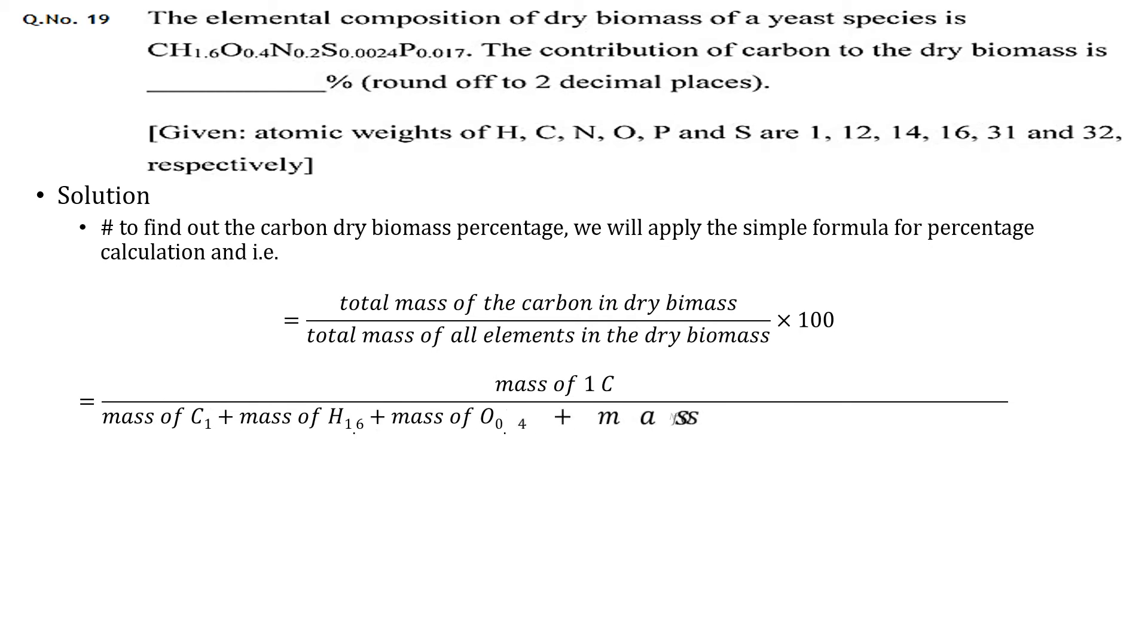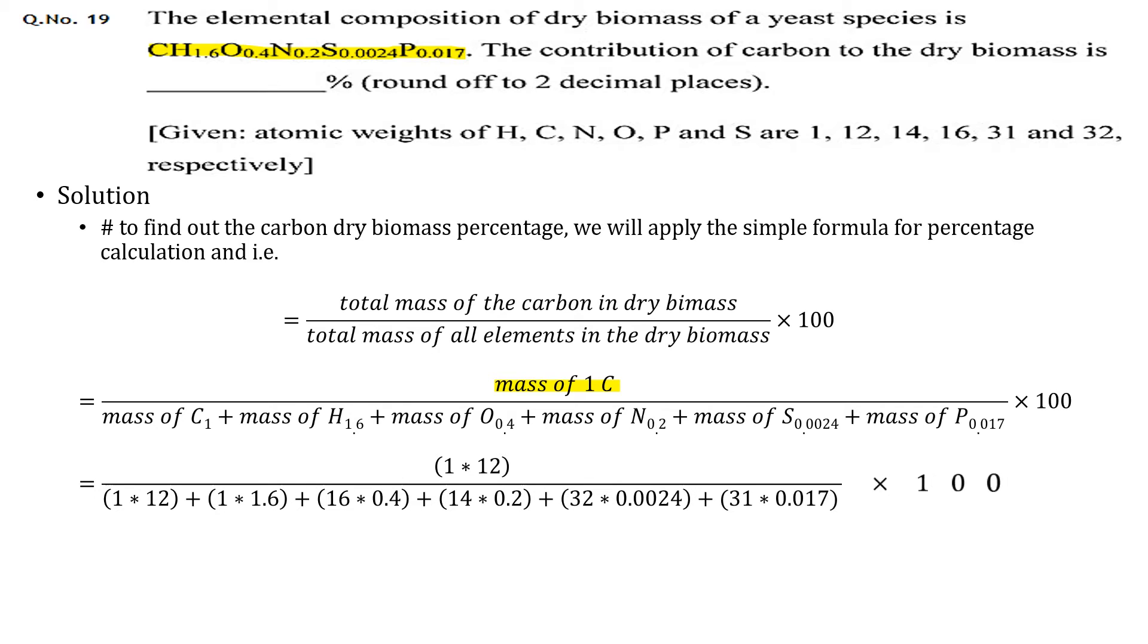As we know from the given chemical formula that there is only one carbon atom, the total mass of carbon in it is the mass of single carbon atom. Similarly, now to calculate the mass of all elements, we will simply multiply the mass of each element to their number of atoms present in dry biomass.